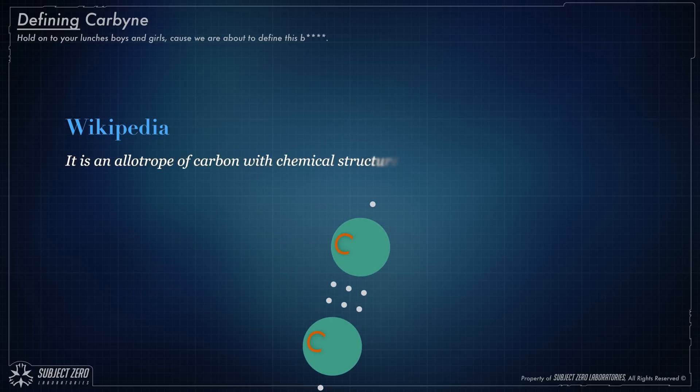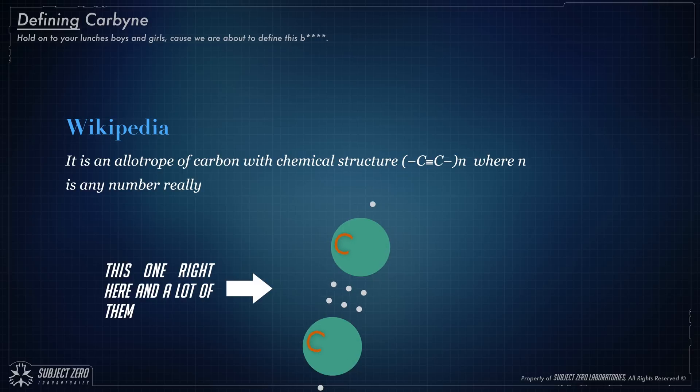And from wiki again, it's an allotrope of carbon with chemical structure where N is any number really. The key here is the triple bonds that make it really strong.